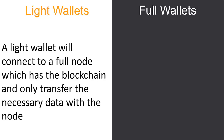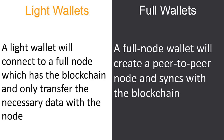In a light wallet, it connects to a full node which has all the blockchain transactions and protocols, and only transfers the necessary data required. For example, if I have a light wallet on my mobile phone and I've done certain transactions, my light wallet will connect with a full node and only download the data of the transactions I've done on my phone.